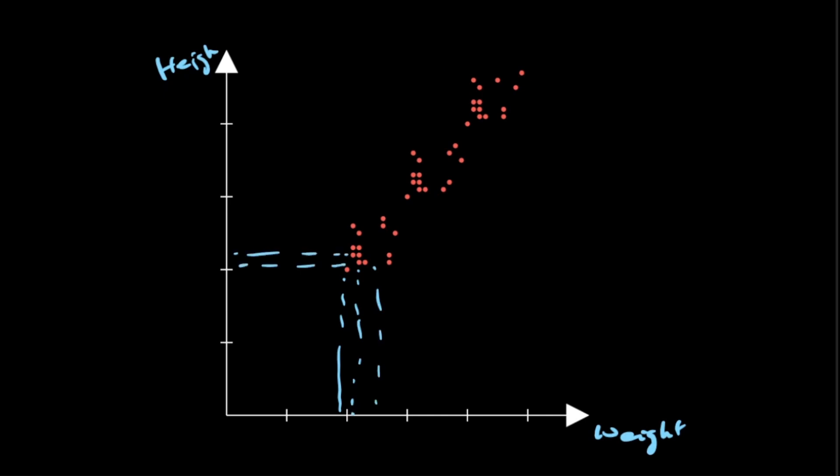However, if you want to understand how these two dimensions are varying with each other, that is where the covariance comes into picture. Covariance tells you in a multidimensional space how each dimension varies with each other.